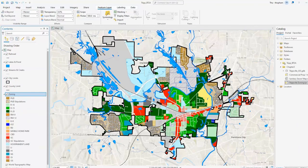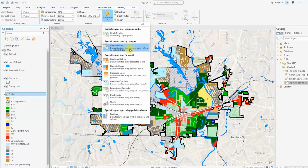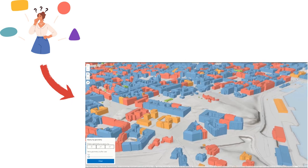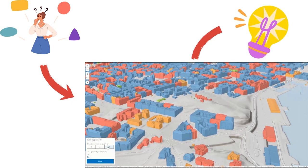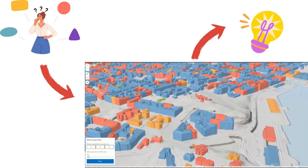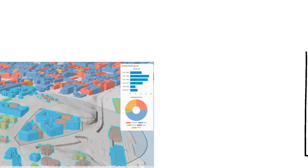GIS is used to identify patterns and relationships in data that would otherwise be difficult to pinpoint. It allows us to make data-driven decisions based on accurate, location-based information.